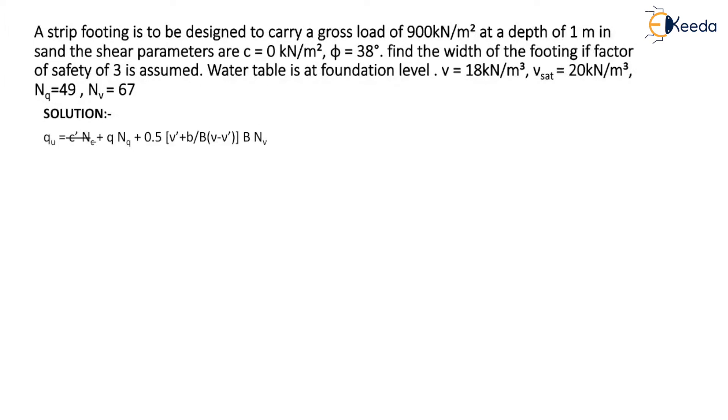Hence q u is equal to 1.2 x 10 x 14.8 plus 18 x 1 x 5.6 plus 0.4 x 18 x 2 x 3.2. Hence q u that is ultimate bearing capacity of the soil will be 325 kN per meter square.